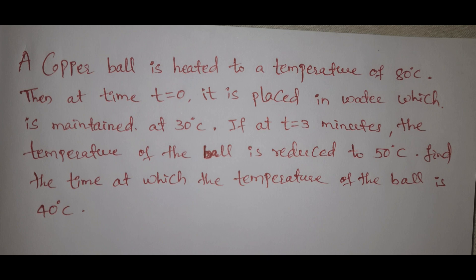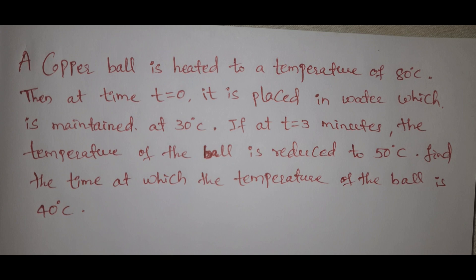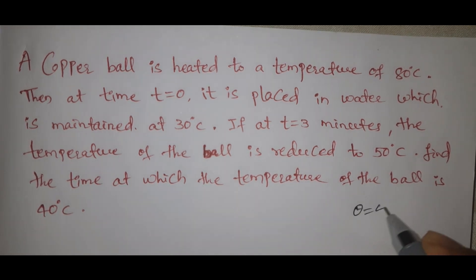At t equal to 3 minutes, the temperature of the ball is reduced to 50 degrees centigrade. Find the time at which the temperature of the ball reaches 40 degrees centigrade. So theta equal to 40 degrees centigrade is the time to find as the boundary condition.